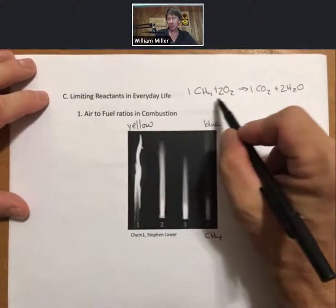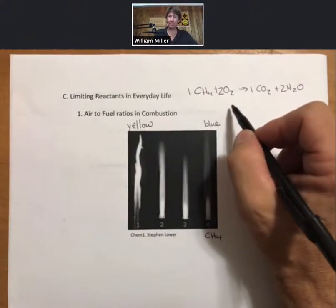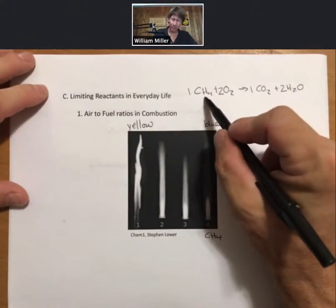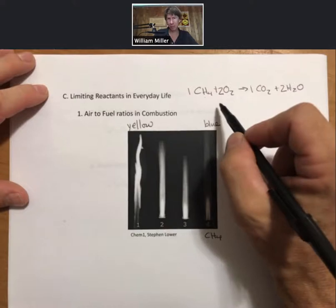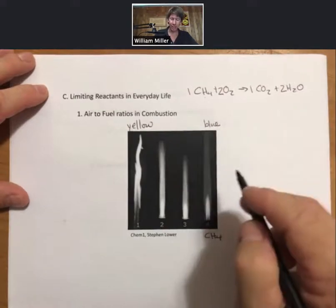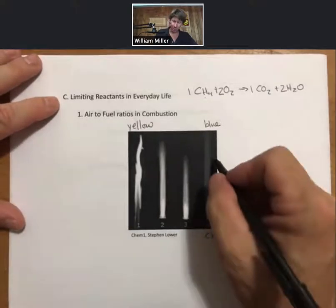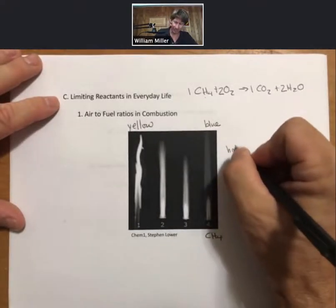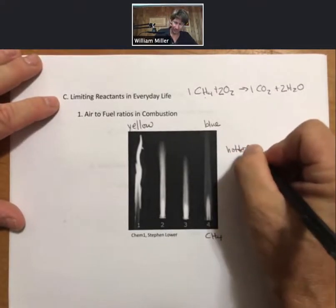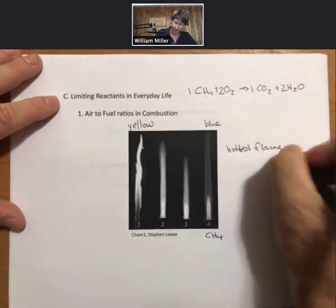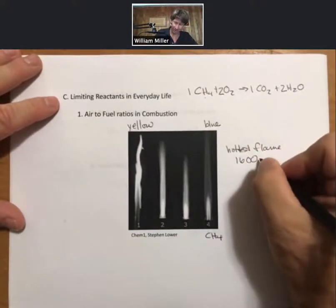The balanced reaction tells you how the reactants react together. We could have any grams or any ratios of these, and that'll change which one is the limiting reactant. In flame number four, which is a blue flame, it is also the hottest flame, approximately 1,600 degrees Celsius.